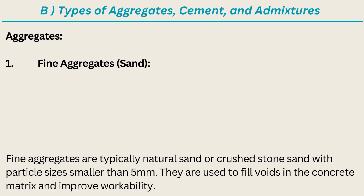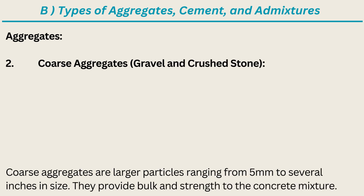Aggregates. Item 1: Fine Aggregates — Sand. Fine aggregates are typically natural sand or crushed stone sand with particle sizes smaller than 5 mm. They are used to fill voids in the concrete matrix and improve workability. Item 2: Coarse Aggregates — Gravel and Crushed Stone. Coarse aggregates are larger particles ranging from 5 mm to several inches in size. They provide bulk and strength to the concrete mixture.